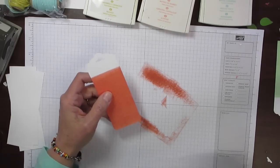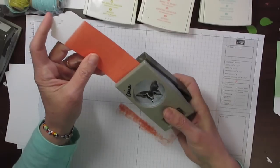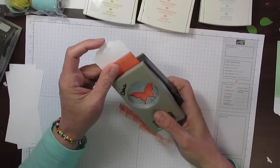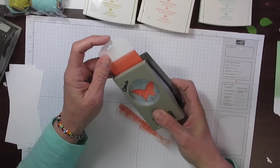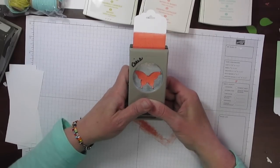I'm going to show you a little technique they showed us with the Butterfly Punch, which you're going to slide your piece of cardstock all the way until it butts up flush with the end, until it hits the end. Then I'm just making sure that it's somewhat centered.